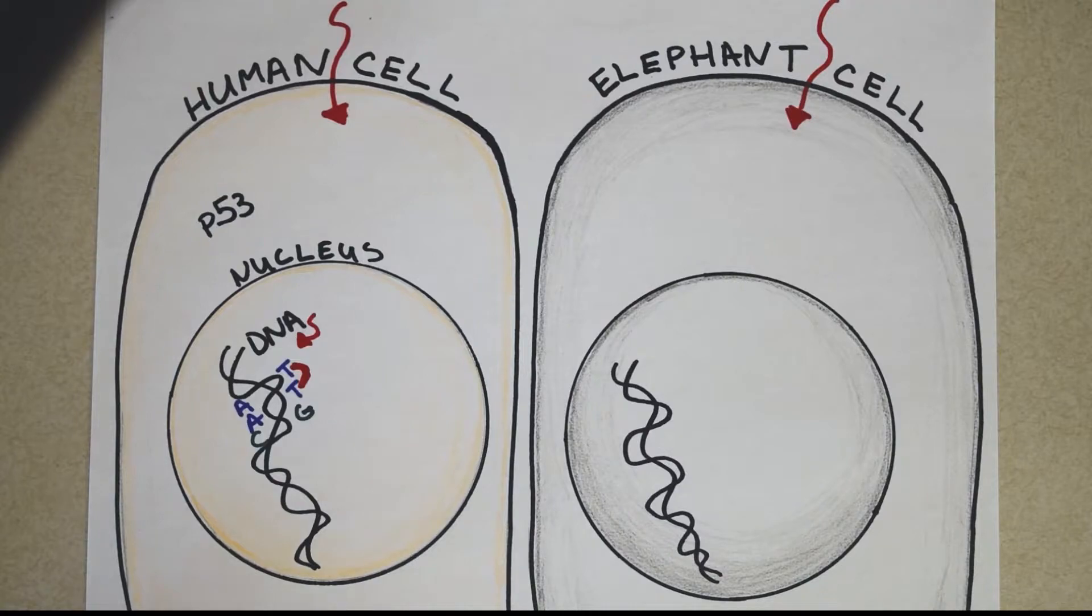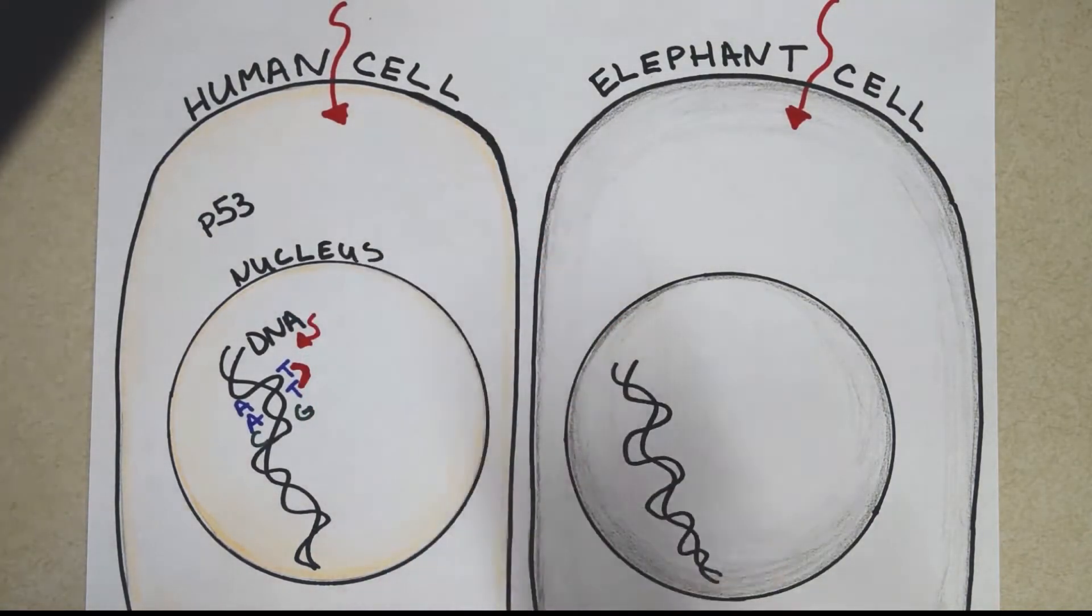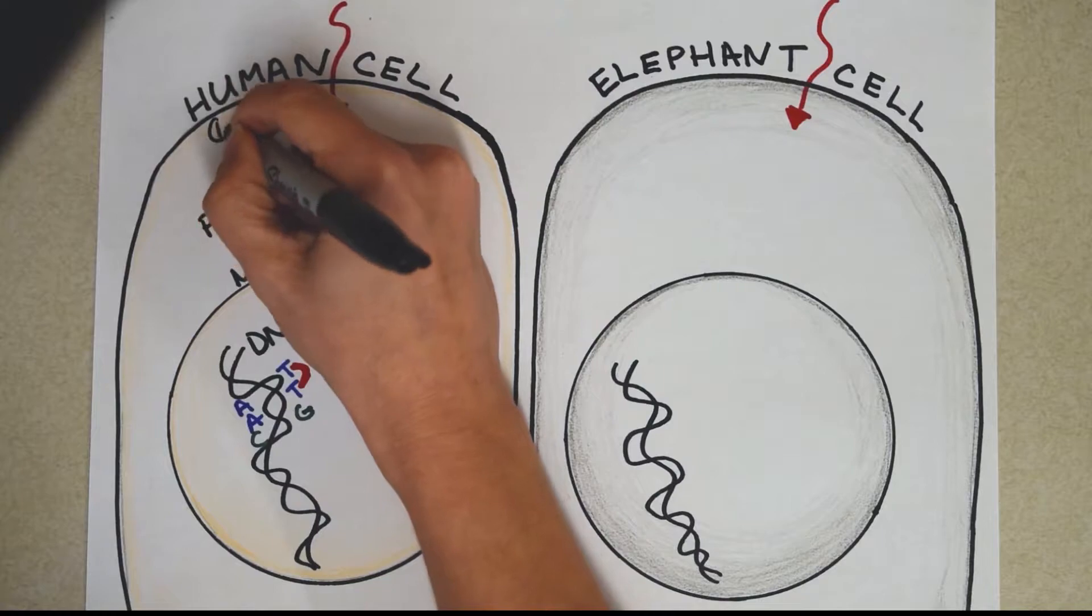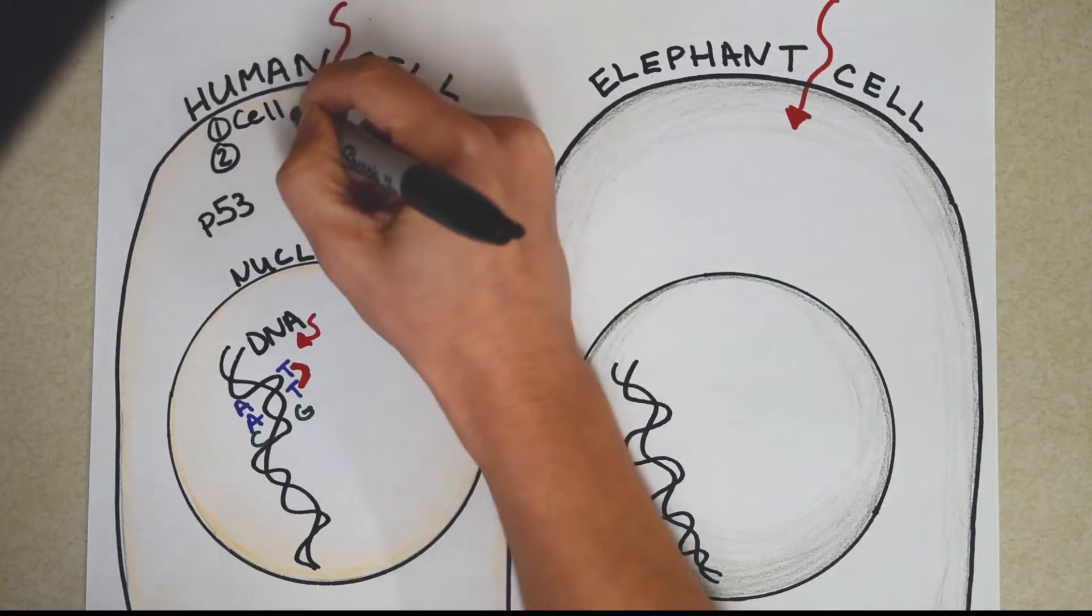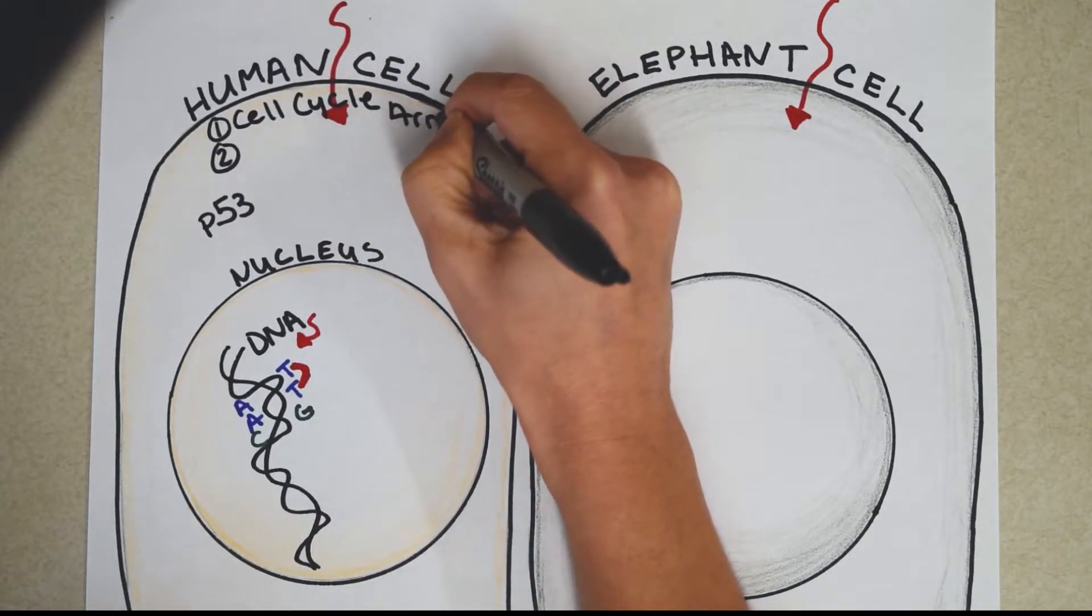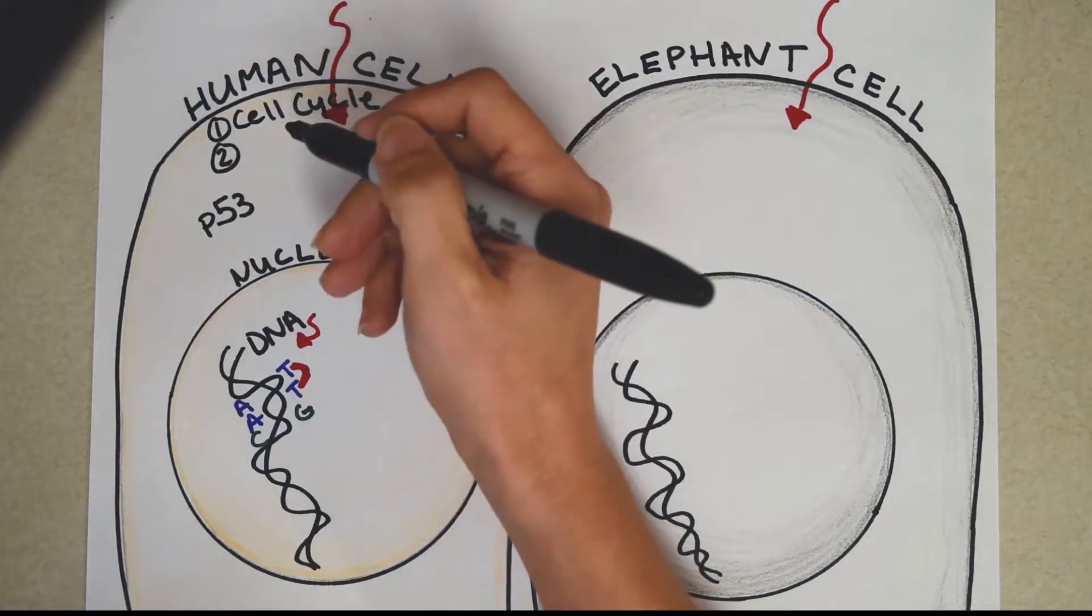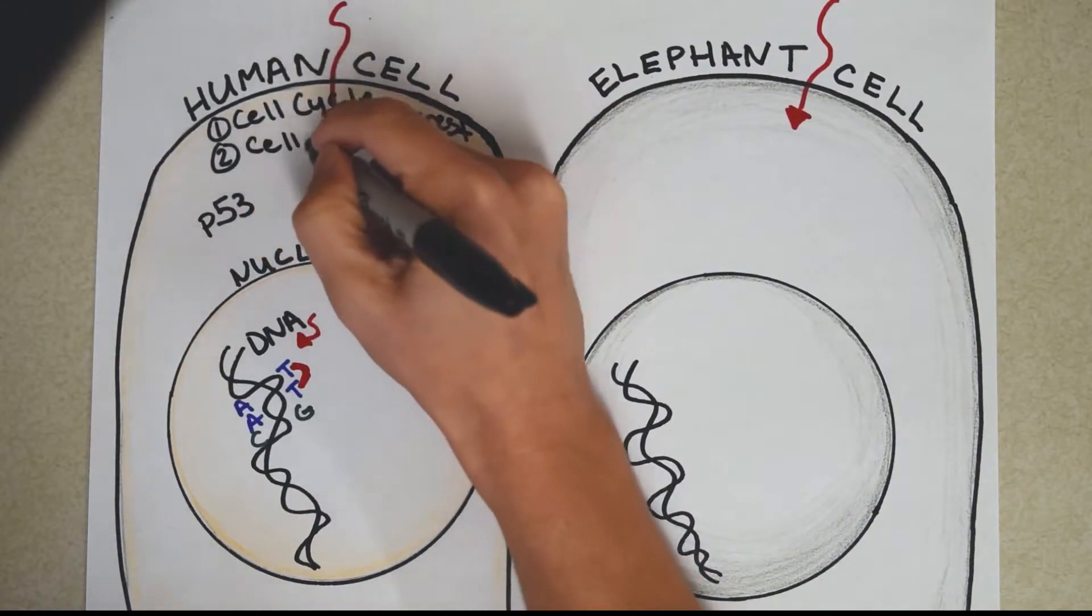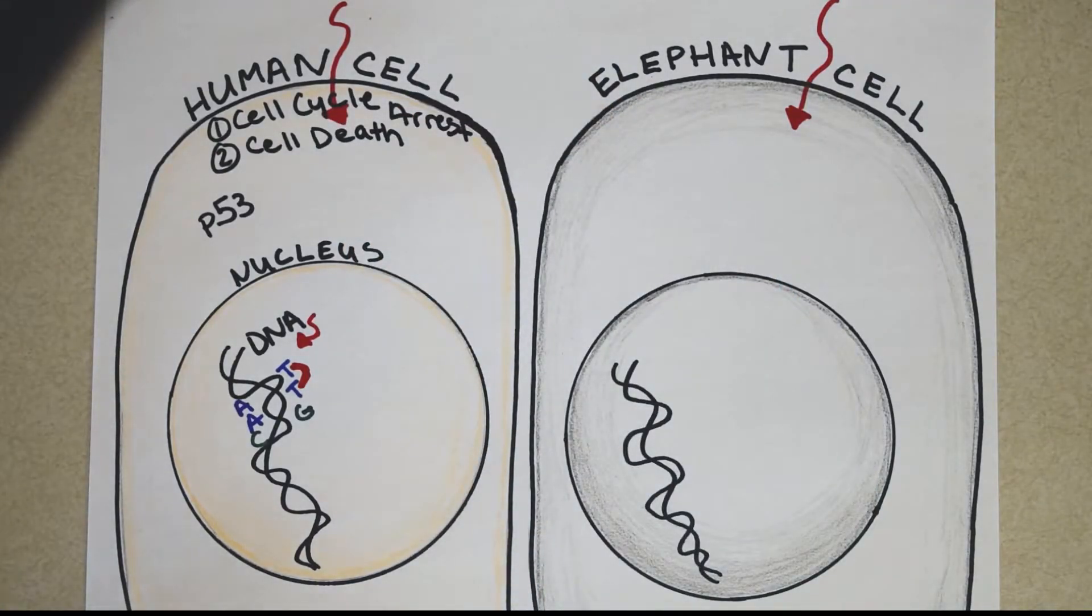P53 is a tumor suppressing protein. In fact, in people who have cancer, 50% of them have some type of a mutation in P53, because it's that important in stopping cancer. So P53 can start two things. Door number one, and we have door number two. Door number one is cell cycle arrest. It literally says stop, stop. You cannot divide right now. I've detected that something is wrong. Number two is cell death. So this is definitely the more extreme reaction, but P53 can cause either of these to occur.